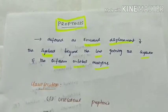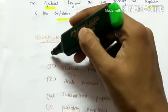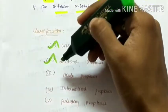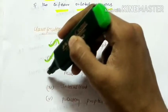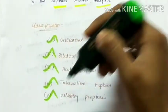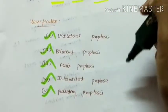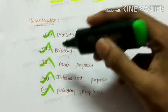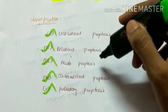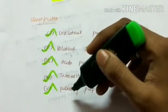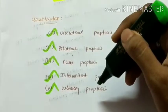Classification of proptosis. Proptosis can be unilateral, bilateral, acute, intermittent, or pulsating. So the classifications are: unilateral proptosis, bilateral proptosis, acute proptosis, intermittent proptosis, and pulsating proptosis.